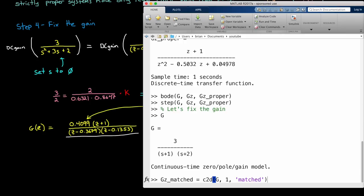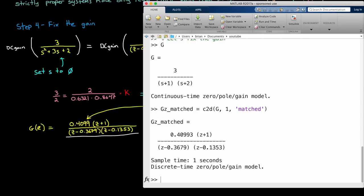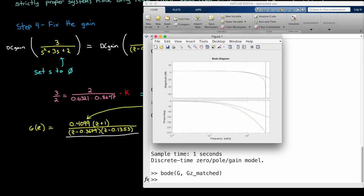And now we can plot the Bode plot for this final version and see just how nicely the two gain plots overlay with each other. We can also plot the step response and see that they're also much closer now than they were before. So those last three steps in the matched method were pretty necessary.